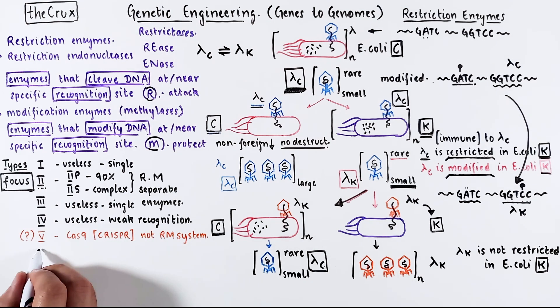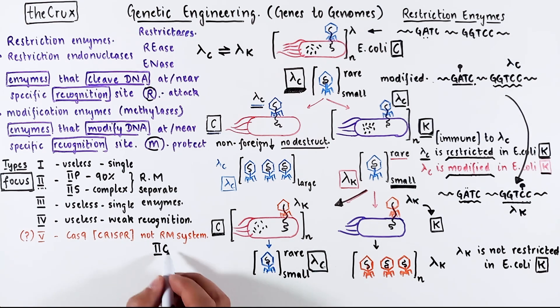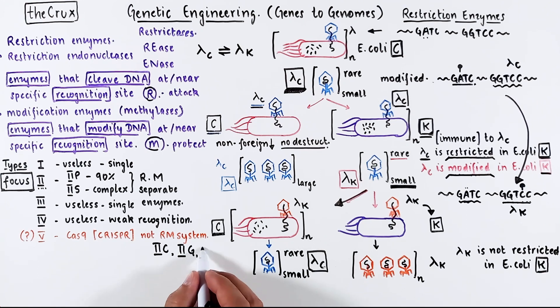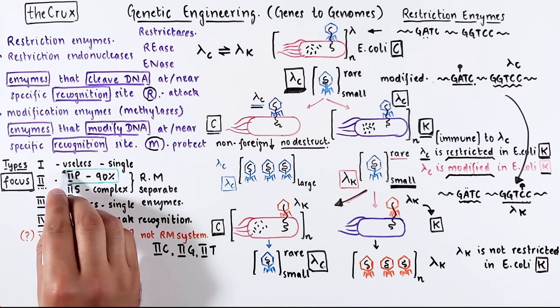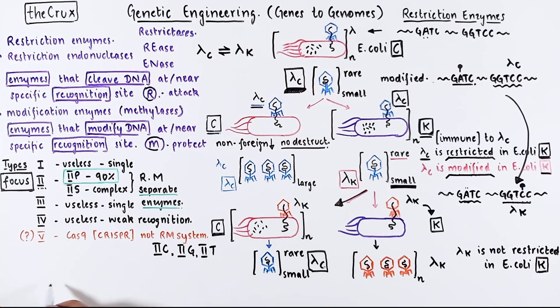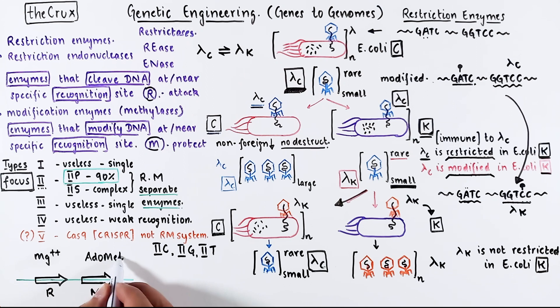Side note, the type 2 system has many other subcategories as well. You don't need to know them, but at least you should know that they exist. Also, just so that this is super clear, the separate enzymes really means that there are two separate reading frames for both R and M enzymes. Generally, all restriction enzymes need magnesium as cofactor, and the methylases need EDOMET as the methyl donor.